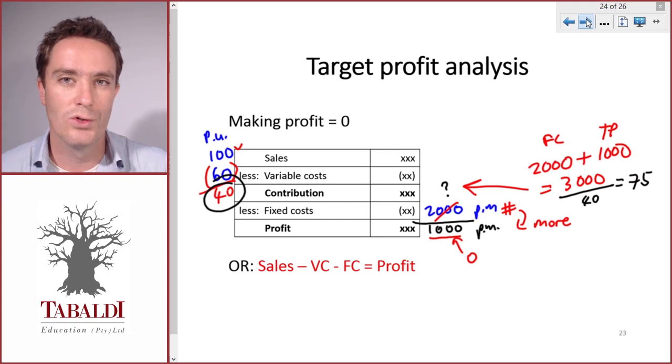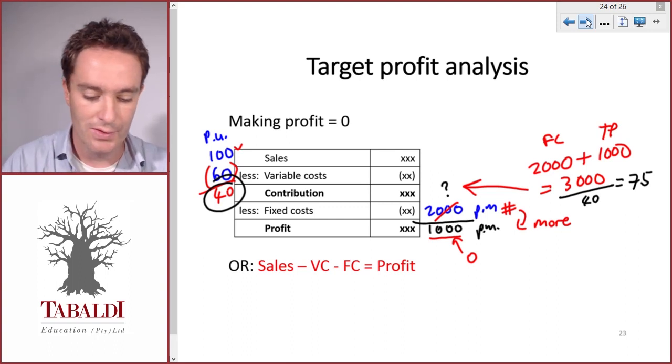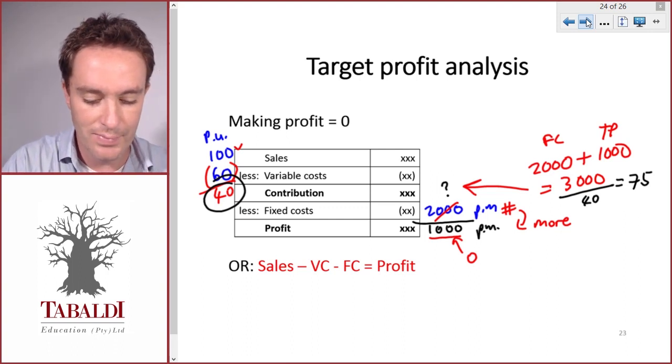So there's another way we can do it. If you look at the algebraic approach, we've got sales here. Remember, sales is the selling price per unit times the number of units, so 100x.